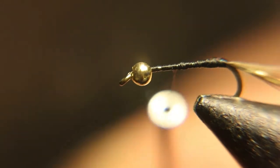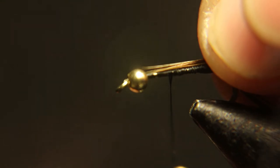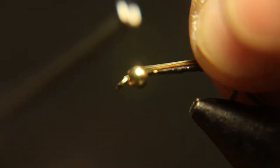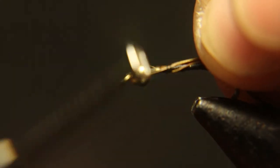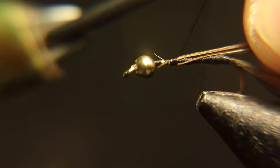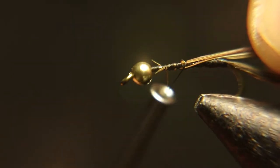So what you're going to do is take some more of that olive pheasant tail and tie it in by the tips. When you get that back, you're going to tie it in and then just start all over again, wrap the pheasant tail around.